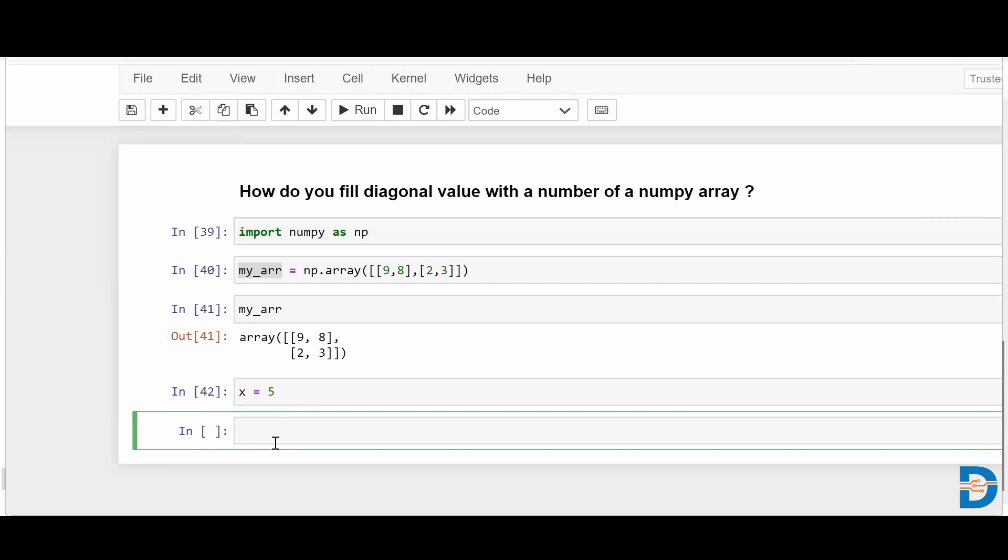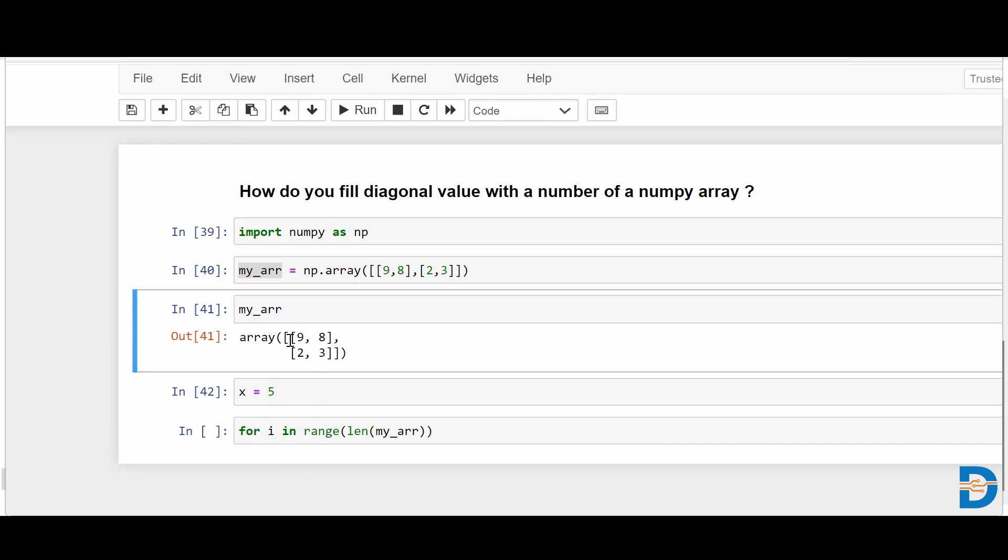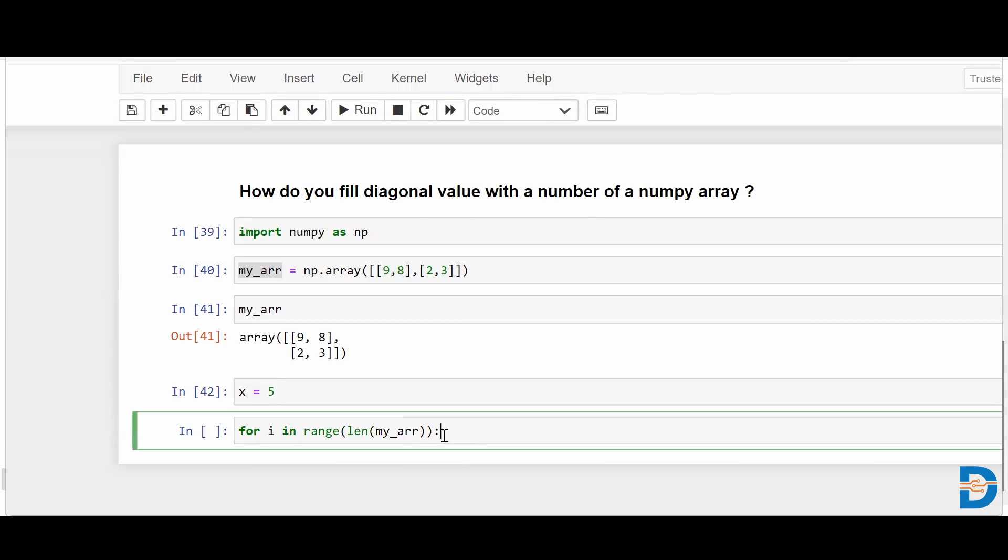For that, I'll say for i in range(len(my_arr)). What I'm saying is you are supposed to go through each and every row index, because when I say range(len(my_arr)) it's first starting with zero and then going to one.